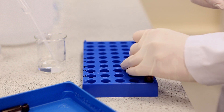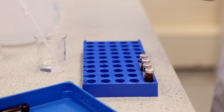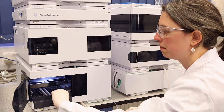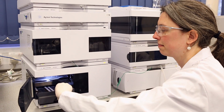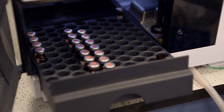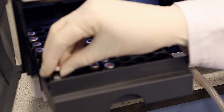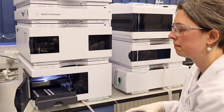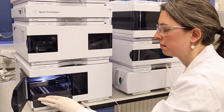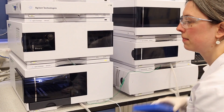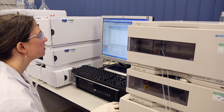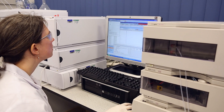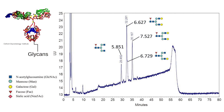N-linked glycosylation is a common protein post-translational modification. Oligosaccharides, released from the protein, are tagged with a UV-absorbing or fluorescent compound. These are separated following HPLC, and the processed chromatogram is used to help identify the oligosaccharides. In this example, biantennary oligosaccharides with core fucose are found.